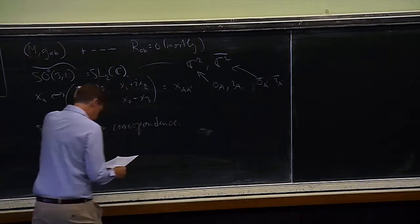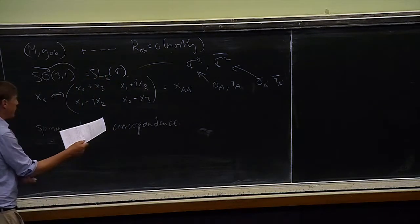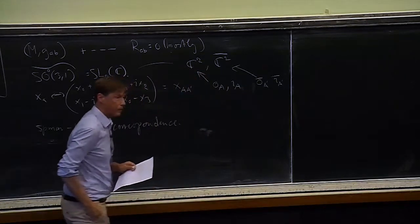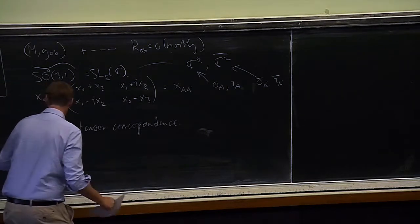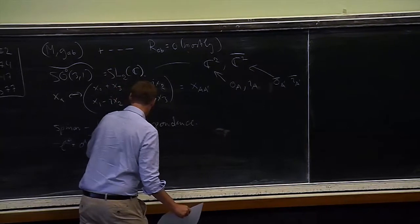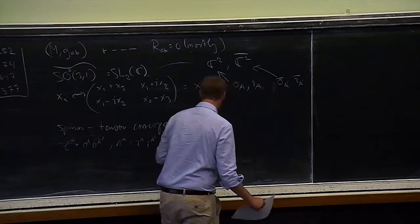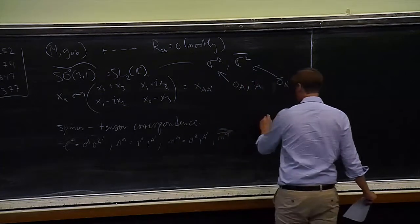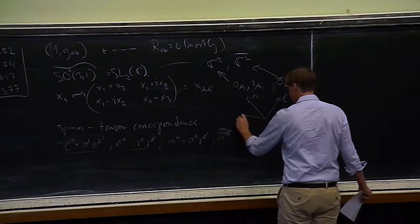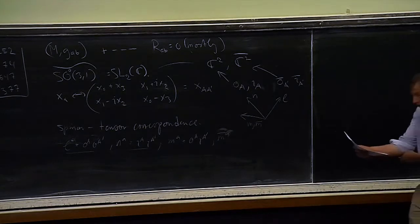An important fact is that this setting is very well adapted to looking at null vectors, because tensor products of one-spinors are null vectors. So there is a null tetrad which comes out naturally, consisting of two real null vectors and two complex ones which can be thought of as aligned in a spherical direction.